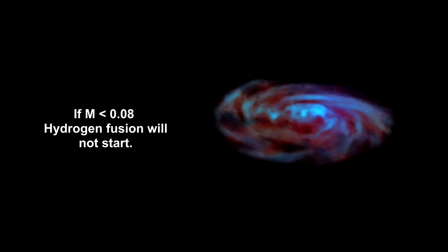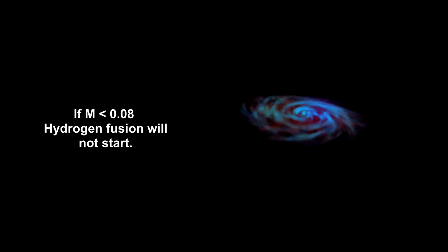This continues until either the cloud material is exhausted and we have a brown dwarf, or thermonuclear fusion begins in its core and we have a young star. You can see why brown dwarfs are sometimes referred to as failed stars.